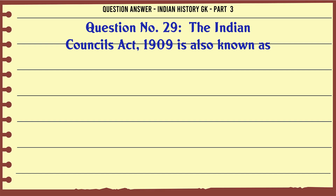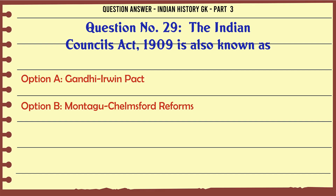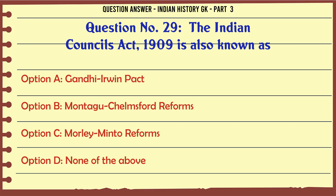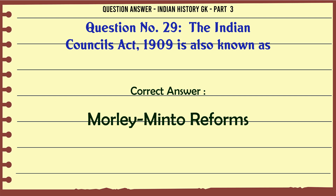The Indian Council's Act of 1909 is also known as: A. Gandhi-Irwin Pact, B. Montagu-Chelmsford Reforms, C. Morley-Minto Reforms, D. None of the above. The correct answer is Morley-Minto Reforms.